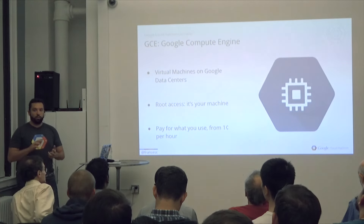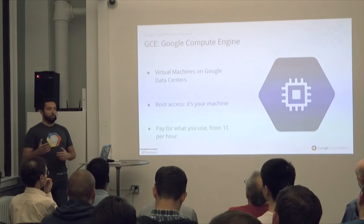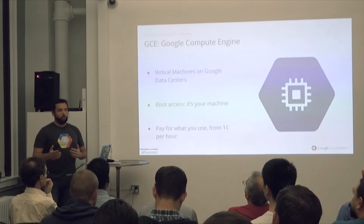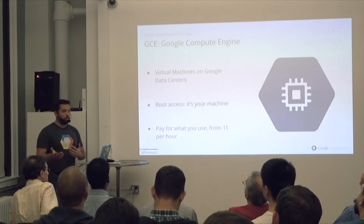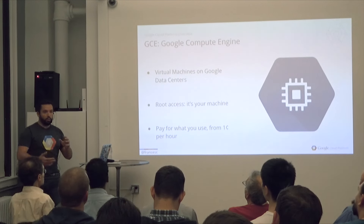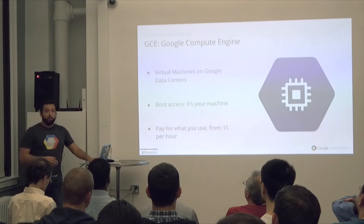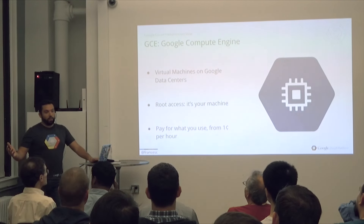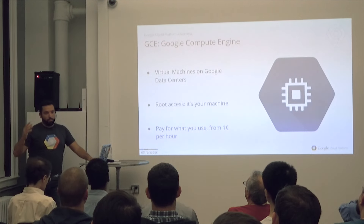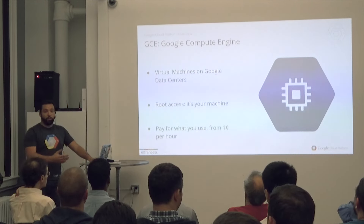I'm going to talk quickly about the three ways of doing computing on Google Cloud Platform. The first is Google Compute Engine — you get VMs, you have root access, you can install whatever you want, whatever OS you want, even uni-kernels if you want. Some are very cheap — less than one cent per hour — but they're very slow. And then there are 32-core machines with lots of RAM, which are faster but not as cheap.